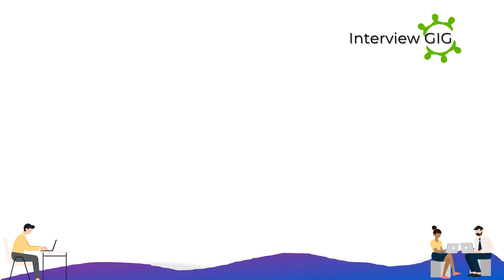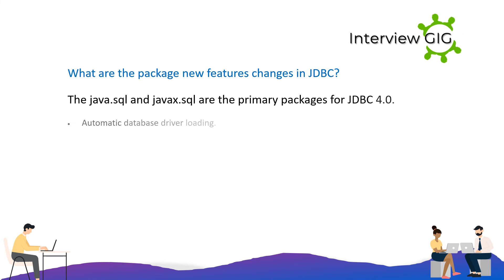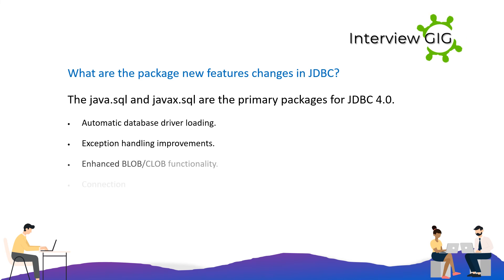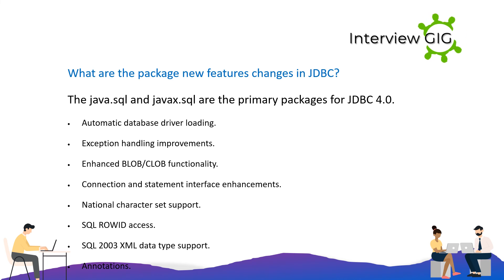What are the new features and changes in JDBC 4.0? The java.sql and javax.sql packages are the primary packages for JDBC 4.0. New features include: automatic database driver loading, exception handling improvements, enhanced Blob/CLOB functionality, connection and statement interface enhancements, national character set support, SQL ROWID access, and SQL 2003 XML data type support.